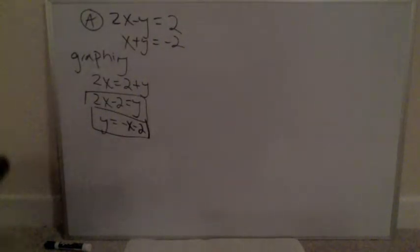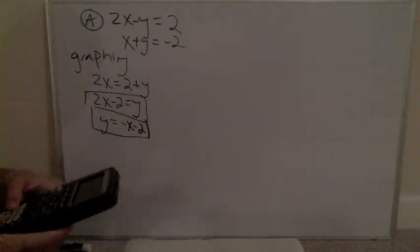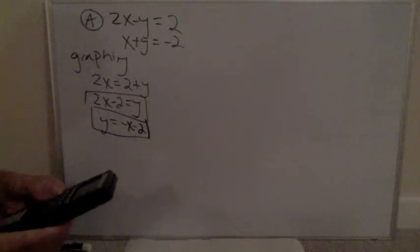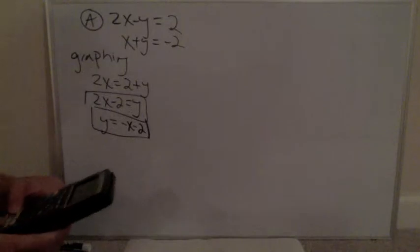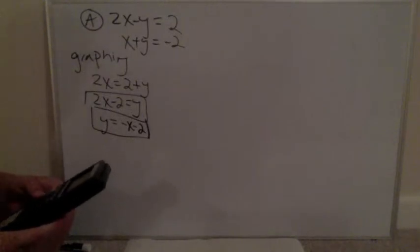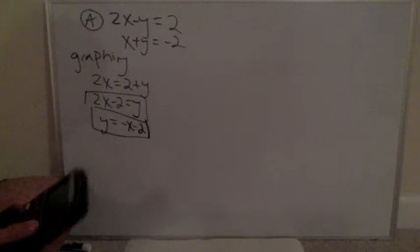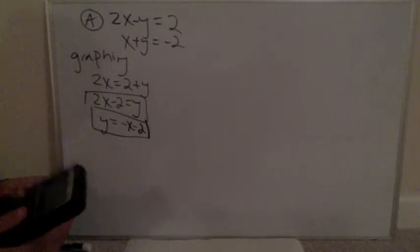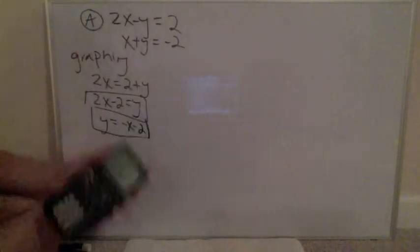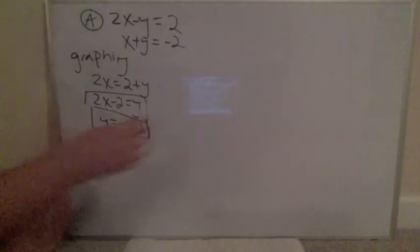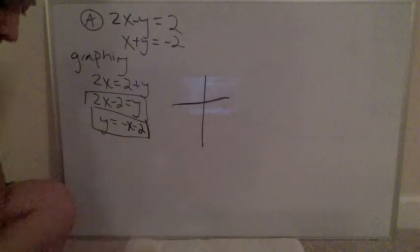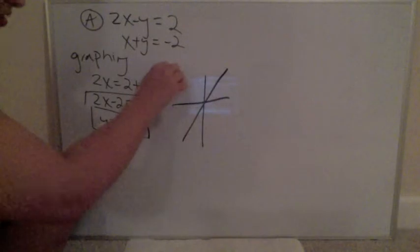To graph these in the calculator, put them both into y equals. So y1 is y equals 2x subtract 2, and y2 is y equals negative x subtract 2. Then hit graph. The graph comes out with two lines.